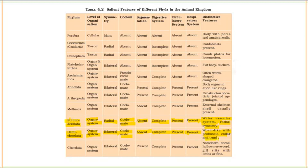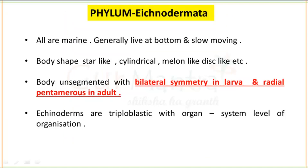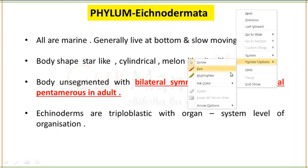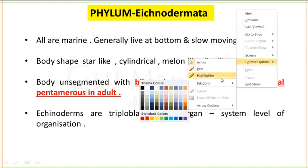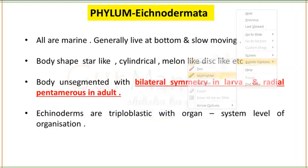Proboscis, collar, and trunk — what does this mean? These are generally Hemichordates' body parts which are present in the body. Now briefly we will start. Number 1 phylum, that is Echinodermates.